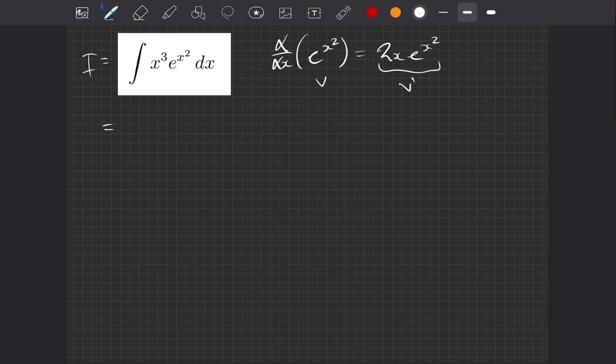So what we can do is we can rewrite our integral and basically write this bit in there. We'll have 2x e to the x squared, and let's just think about what we need then to complete our integrand from the thing that we started with.